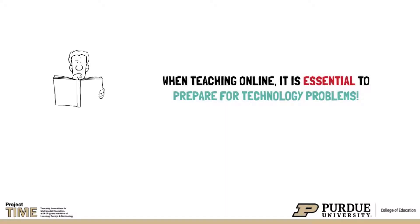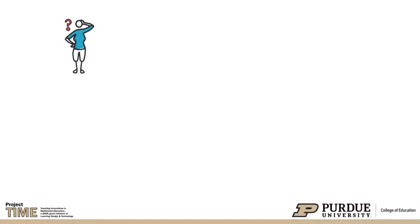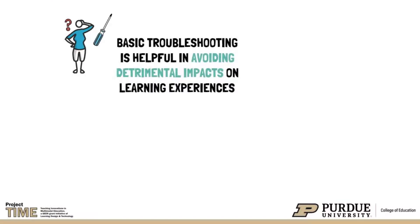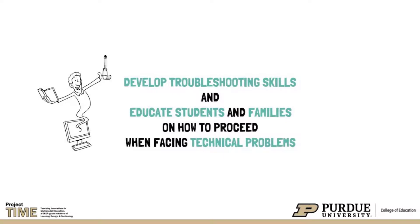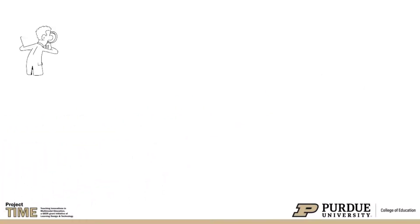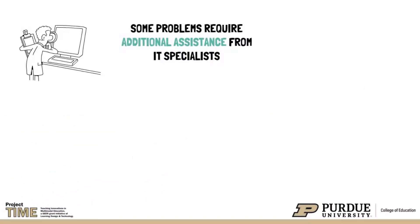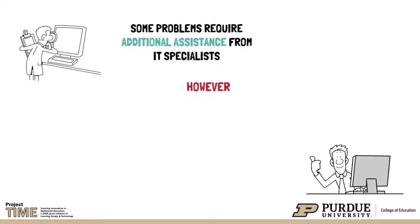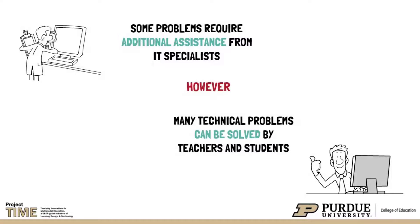When teaching in online environments, it is essential to prepare for technology problems. Basic troubleshooting skills can help avoid the detrimental impact technical problems can have on the learning experience. It is important to develop troubleshooting skills and educate students and their families on how to proceed in case of technical problems. While some technical problems will require additional assistance from building or district IT specialists, many technical problems can be solved by teachers and students. There are general steps for the troubleshooting process that can save time and headaches.